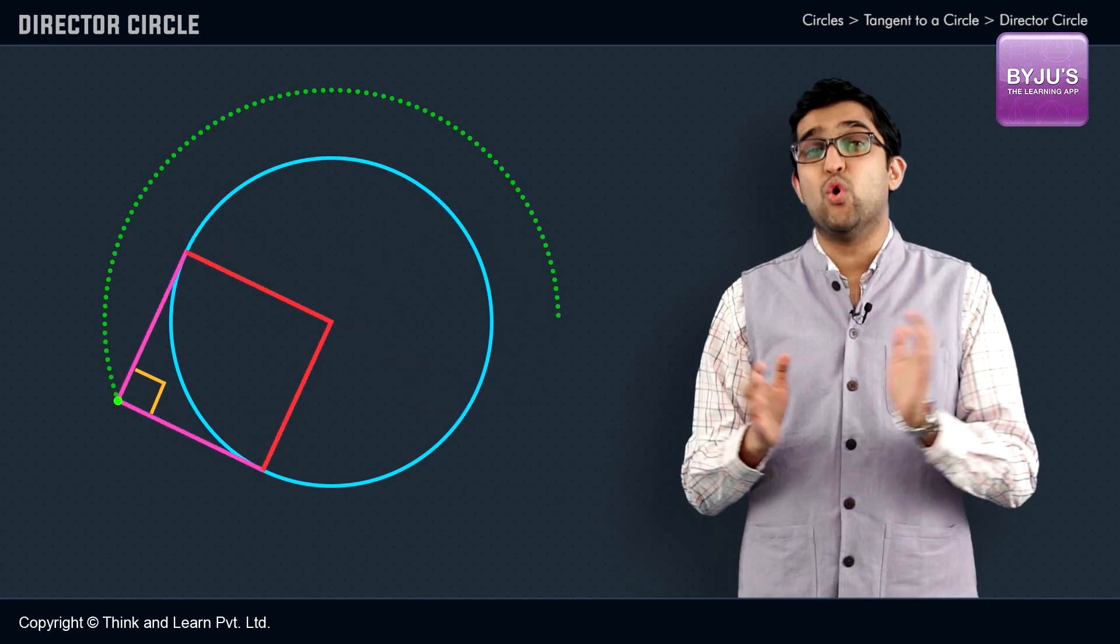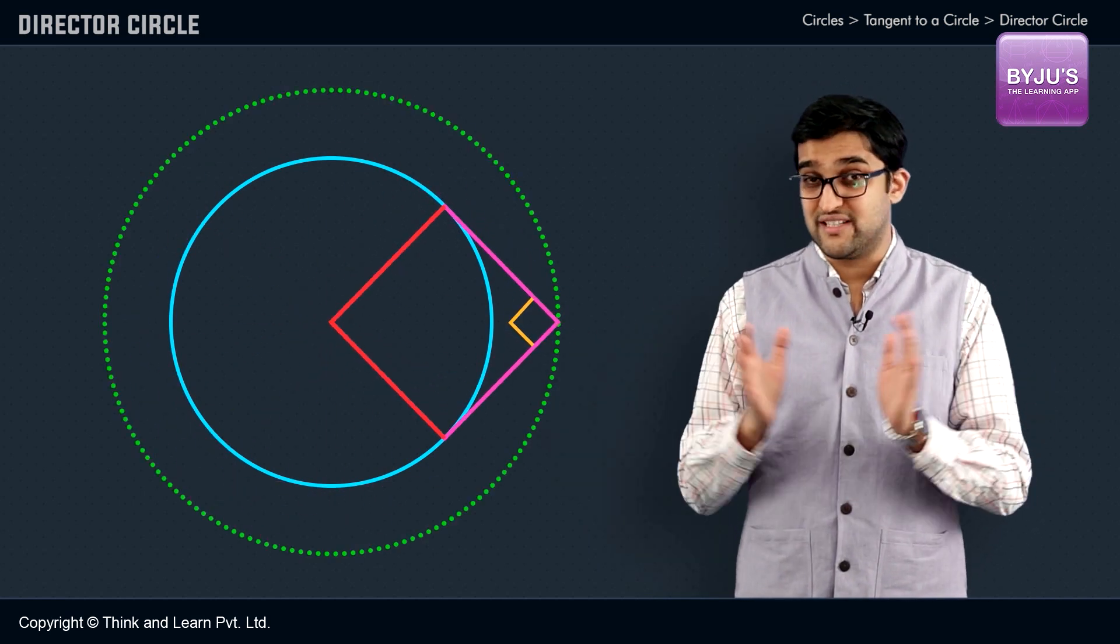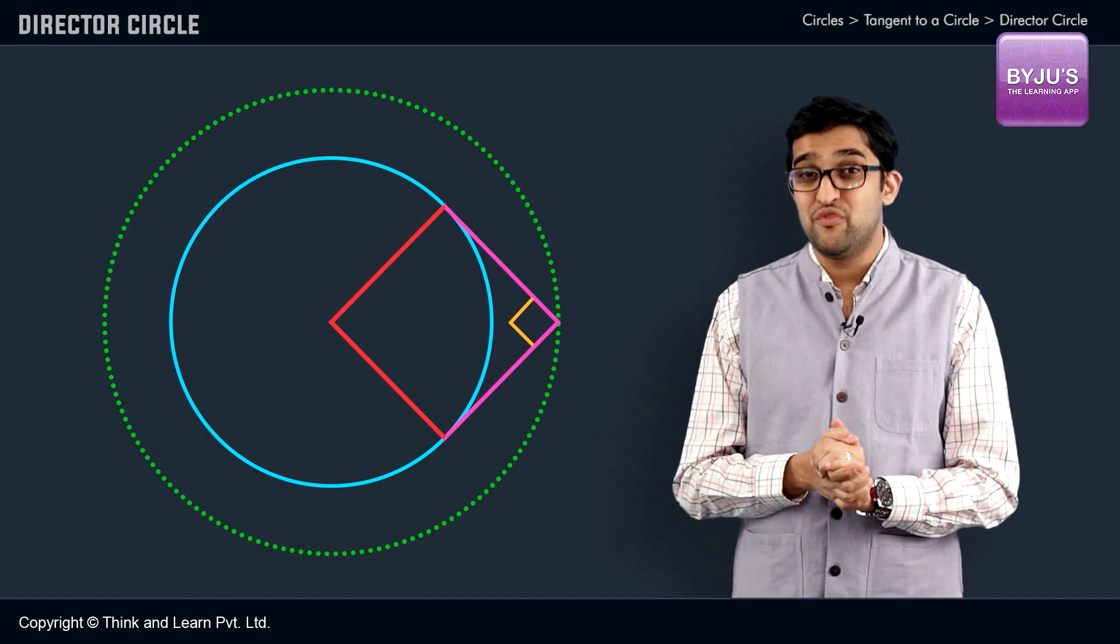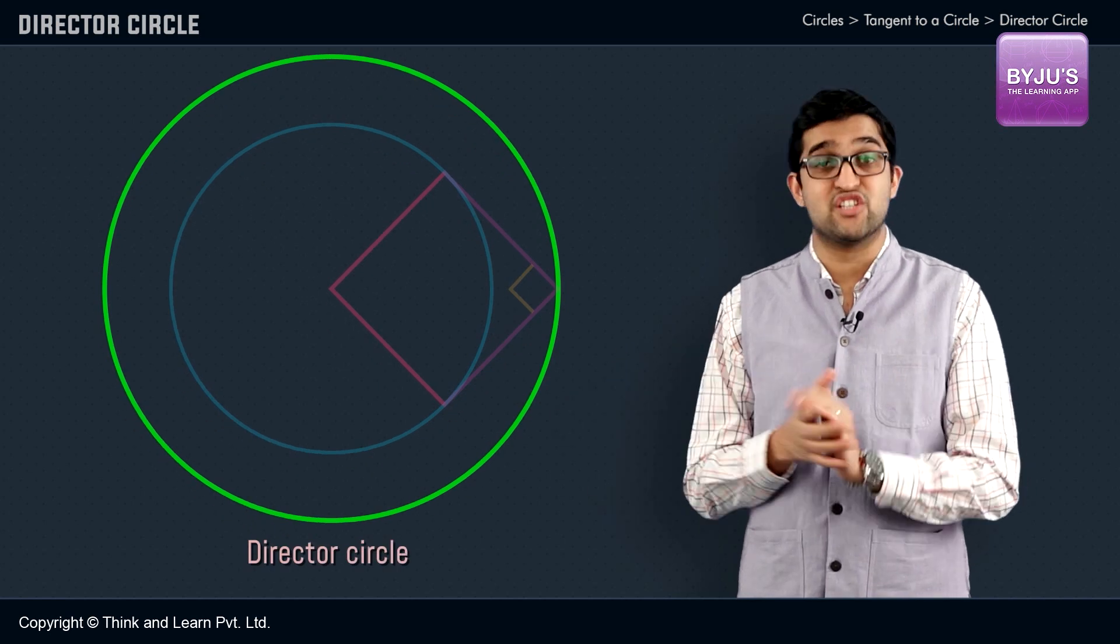If we take the locus of all such points of intersection of tangents which make 90 degrees or a right angle, we get a circle which we call the director circle.